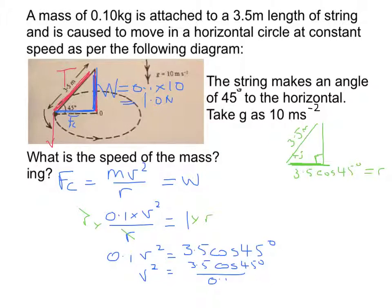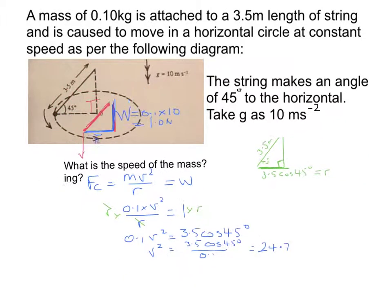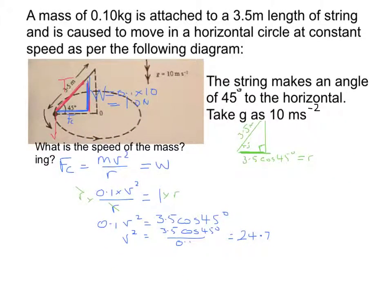And that will be equal to, if we plug into a calculator, 24.7. V will now be equal to the square root of 24.7, which is equal to 4.97 metres per second, or we just say that that's equal to 5, round it off to 5. And that's that question done as well.